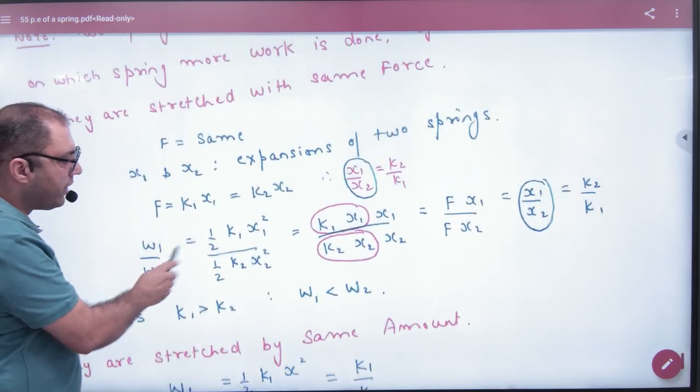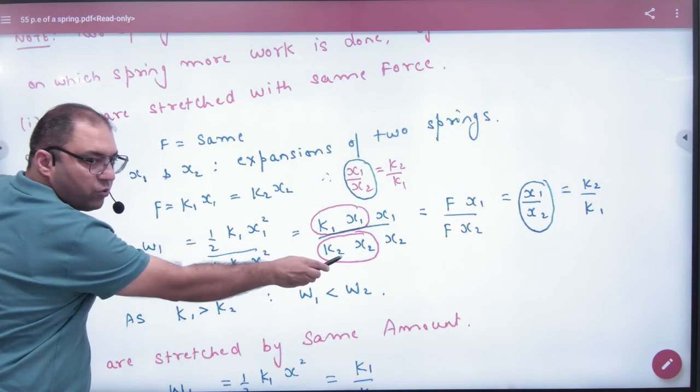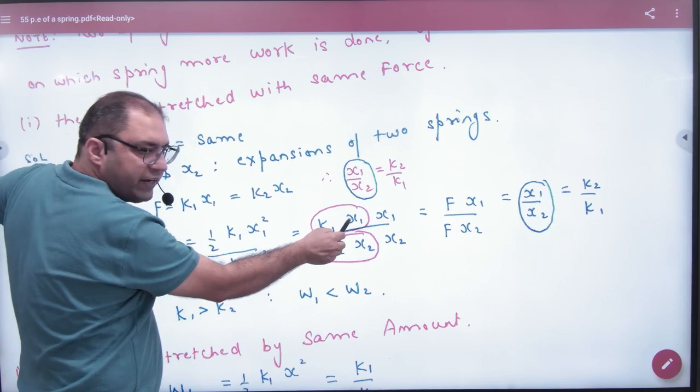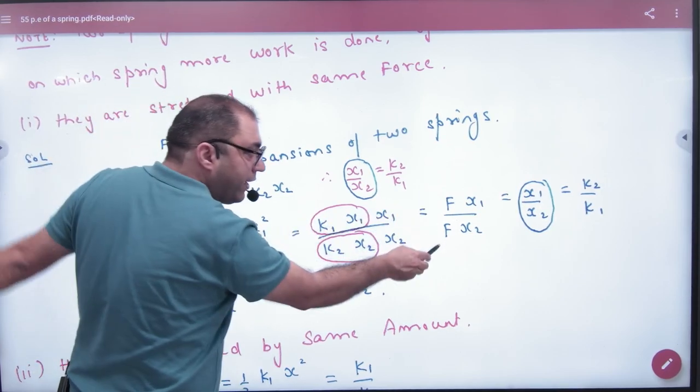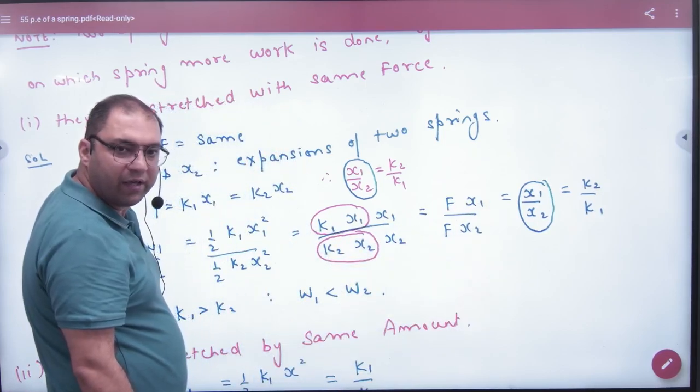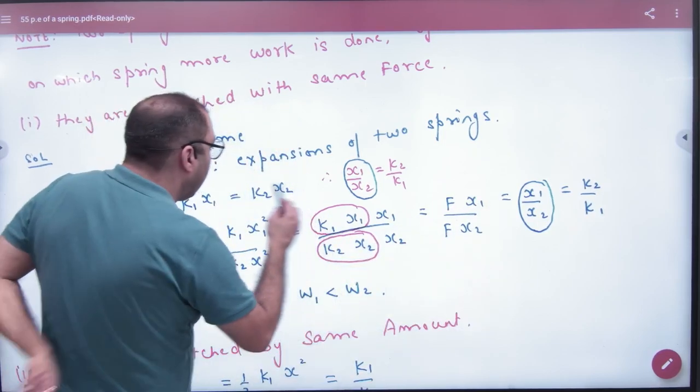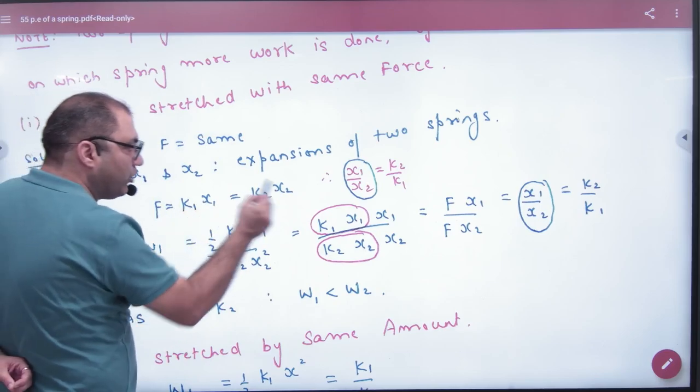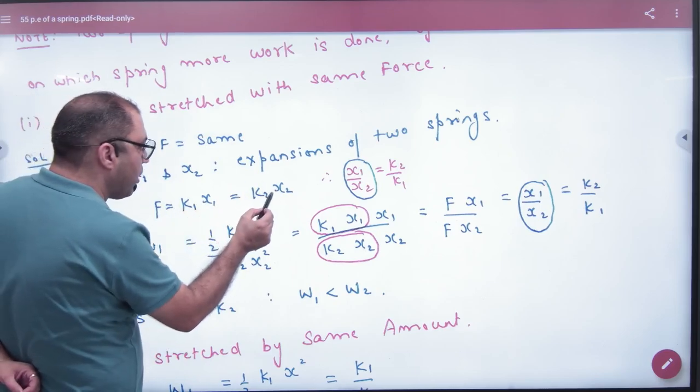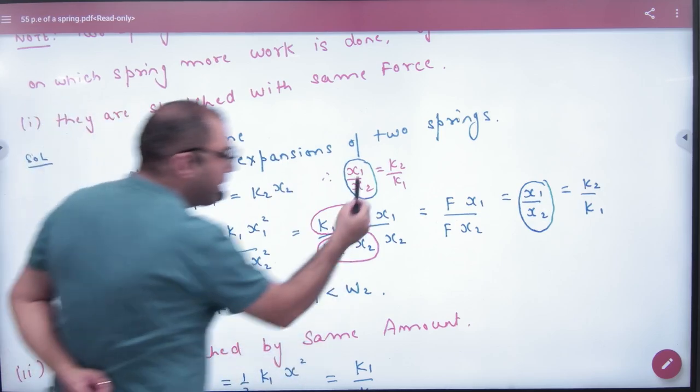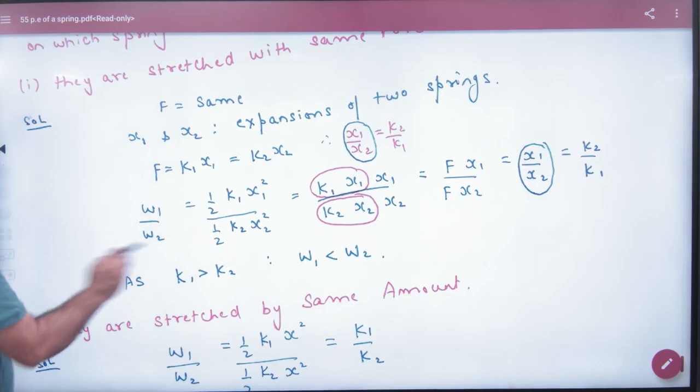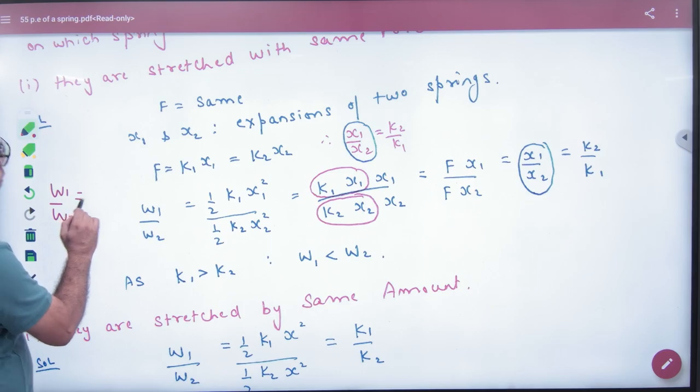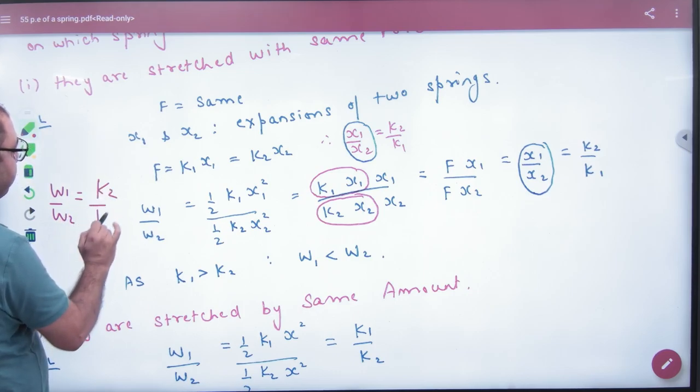Now, in this question, X1 and X2, why? Because K1 X1 is equal to K2 X2. So X1 by X2 equals K2 by K1. Now, you have to put this ratio here, K2 by K1. The ratio of work done W1 by W2 equals K2 by K1.